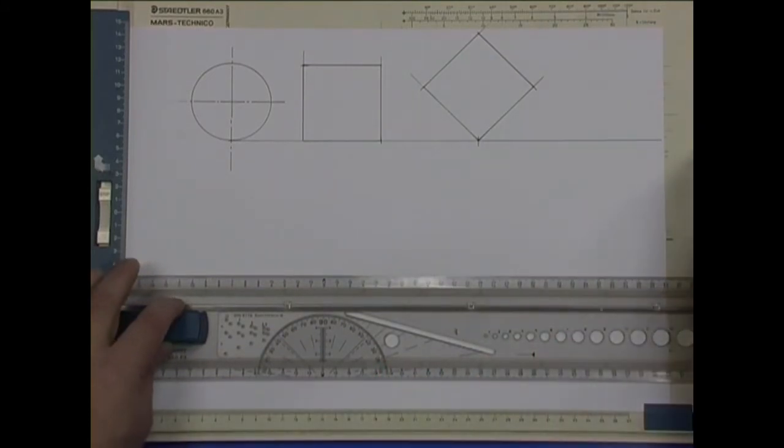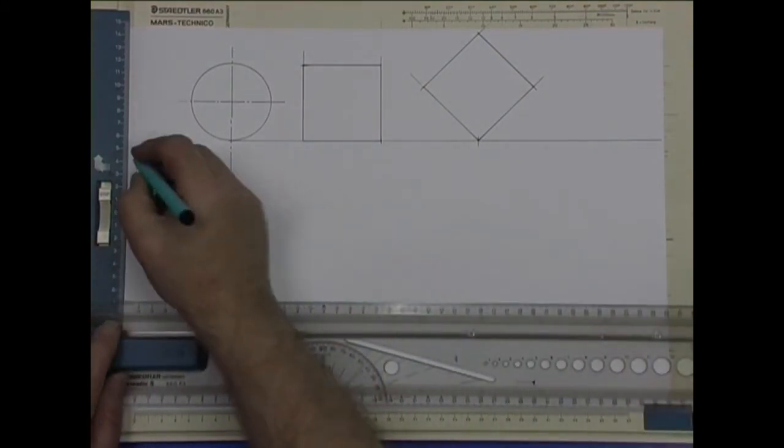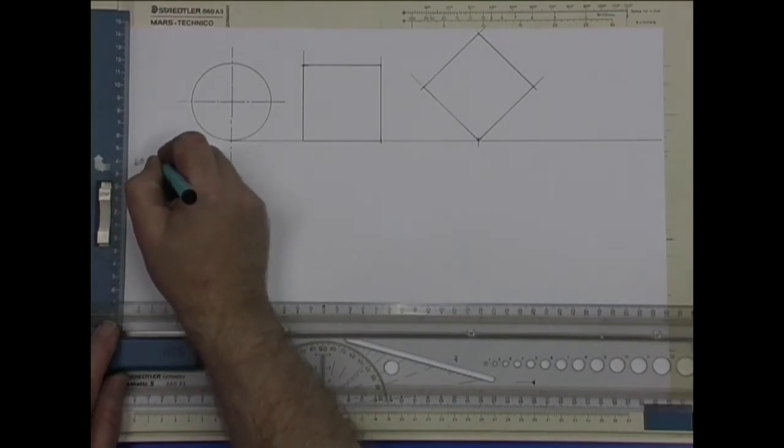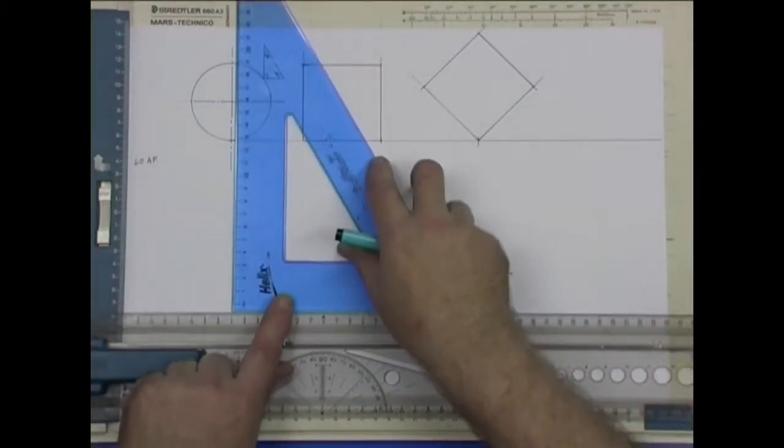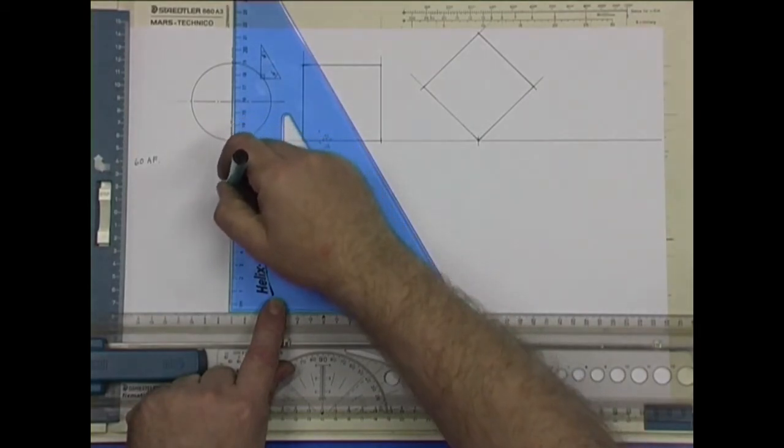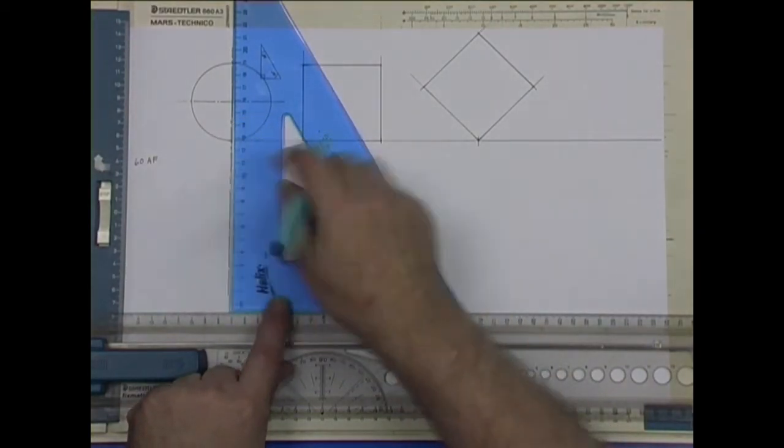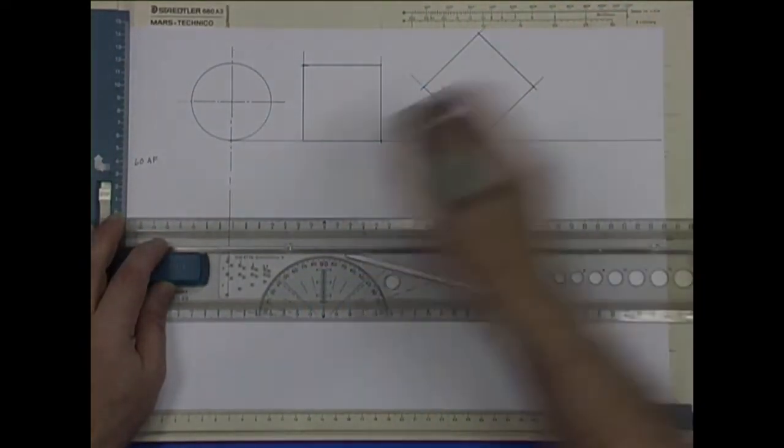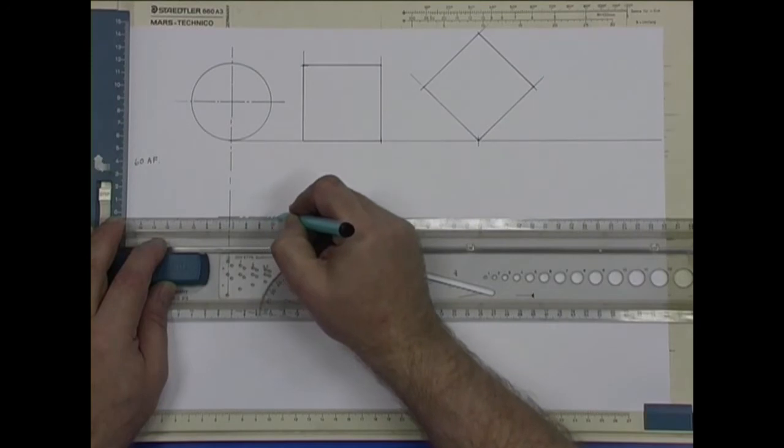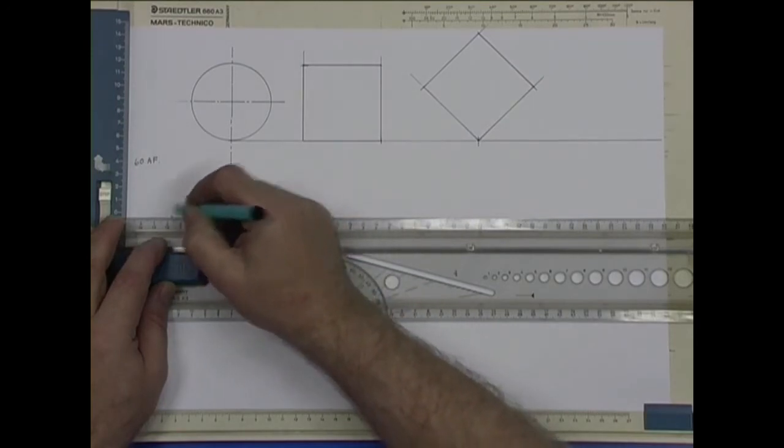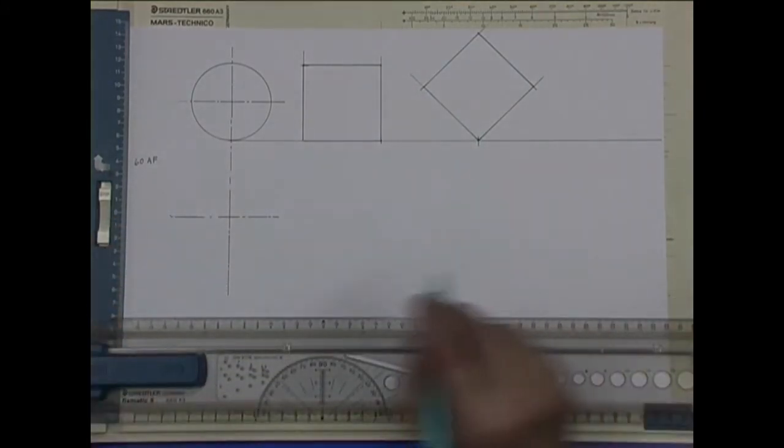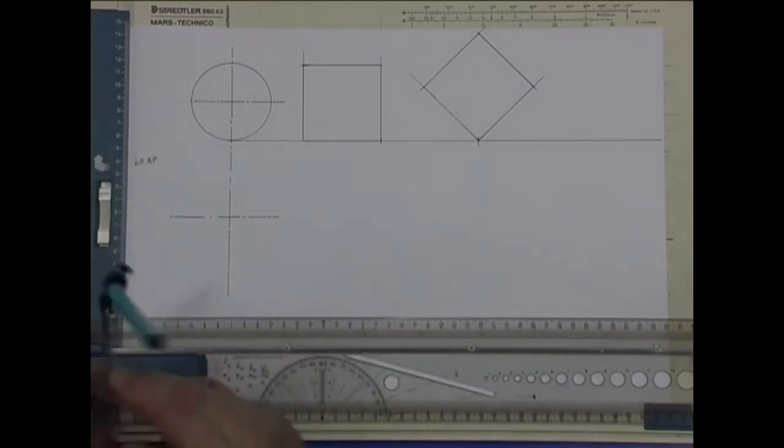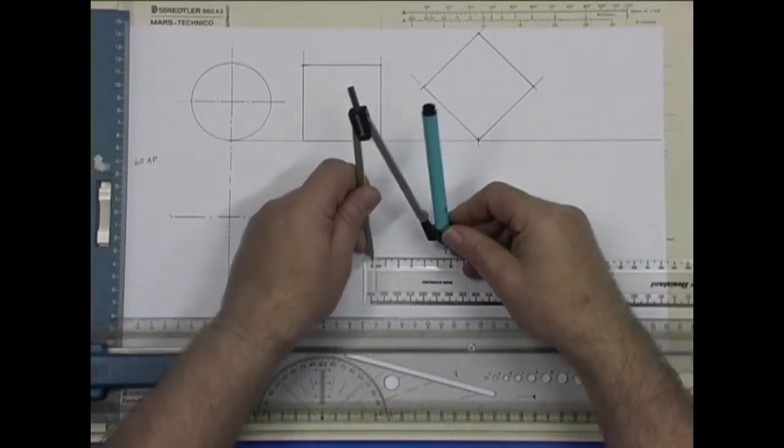And the first one we'll do is 60 across the flats. Now we'll start off with the center. We'll use the same center as that one. And across the flats we'll set our compass at half of that. So half of 60 is 30.